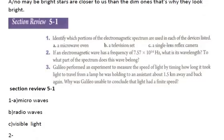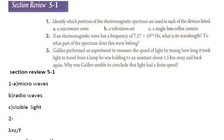Now we can get to section 5-1. We have three questions here; these three questions are important for you. The first one says: identify which portion of the electromagnetic spectrum is used in each of these devices - microwave oven, television set, single lens reflex camera. You can see the answer: microwave oven uses microwaves, television set uses radio waves, and camera uses visible light.